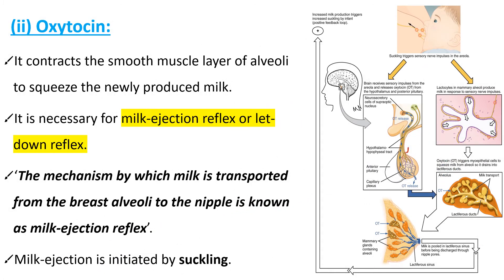Another important hormone that takes part in the lactation process is oxytocin. We already know how oxytocin helped in the contraction of the uterine wall at the time of delivery or parturition. Here it also participates in lactation. Oxytocin mainly helps the smooth muscle layer of the alveoli contract to squeeze the newly produced milk. Due to prolactin, the alveolar cells of the mammary gland produce milk, and oxytocin is necessary for the milk ejection reflex, also called the let-down reflex.